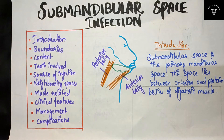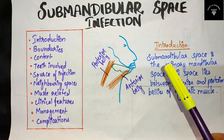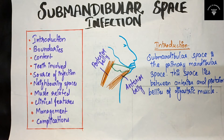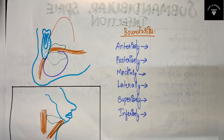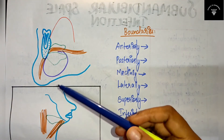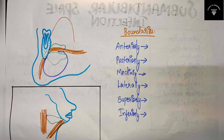You just have to write the introduction of the submandibular space — that is, where this submandibular space lies. Now let's move on to the boundaries of the submandibular space. Look at this diagram; with this diagram you can write the boundaries easily.